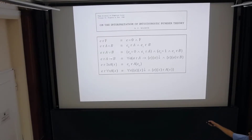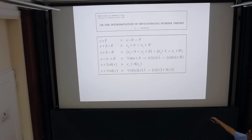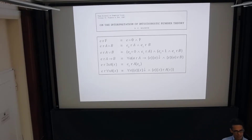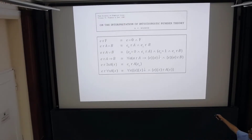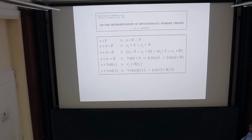With implication, a number e realises an implication if whenever I'm given a number realising the assumption, e can be thought of as the code for a partial computable function that must then be defined and should realise B. That's Kleene's definition — which will soon be a hundred years old.